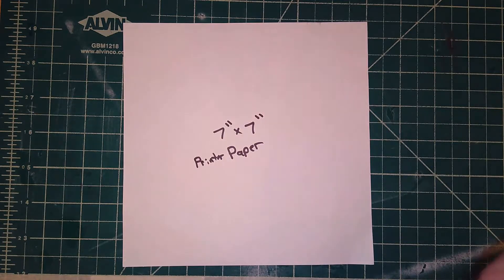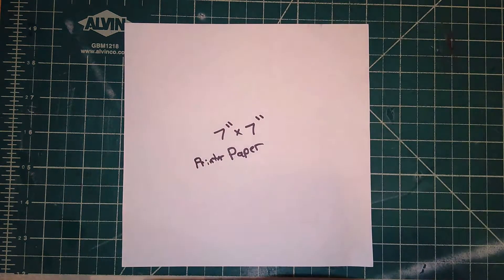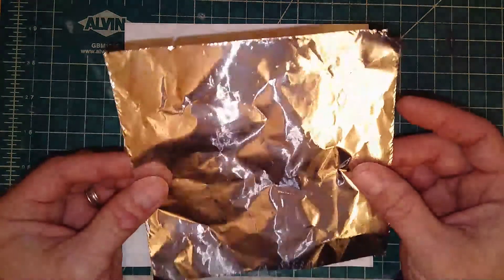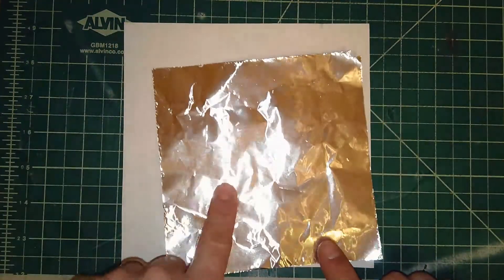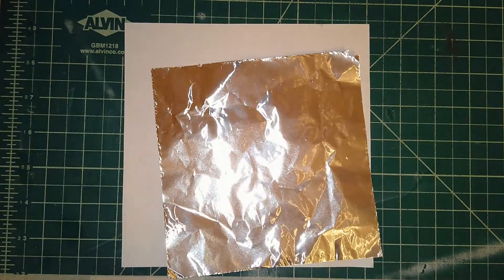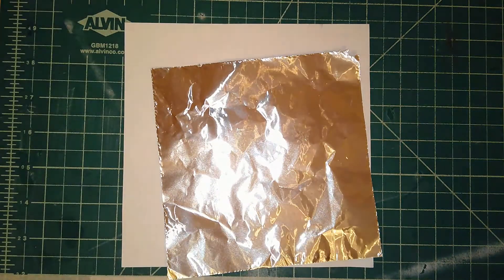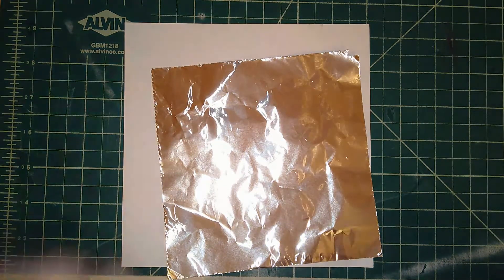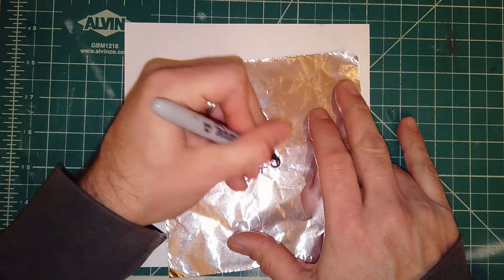Okay, now we have our 7 inch by 7 inch piece of printer paper here. We're also going to need two pieces of aluminum foil. This aluminum foil is six inches by six inches and we'll need two of them.